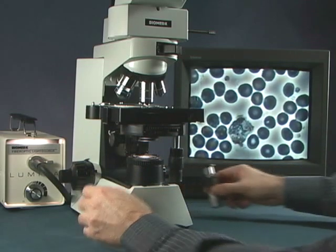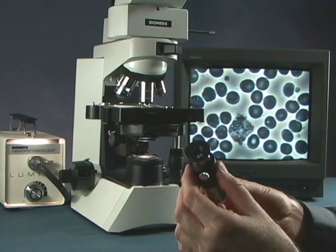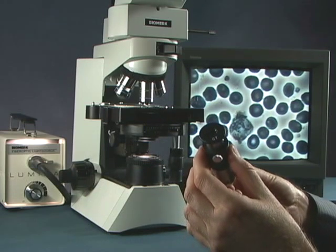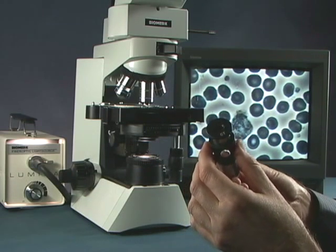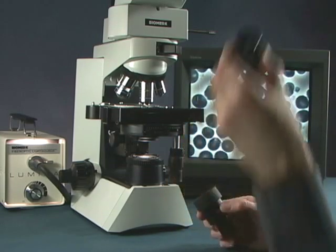Now we typically would use a centering telescope. This is a lens assembly that basically fits into one of the eyepiece slots. So we pull out the eyepiece and we simply put this in its place.